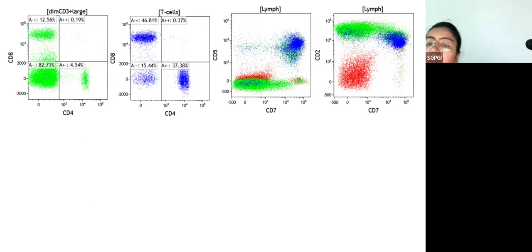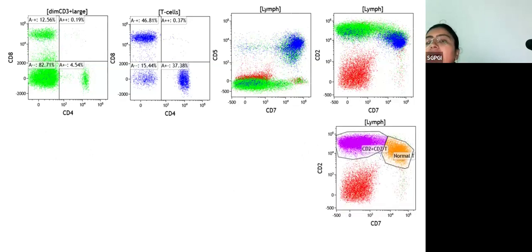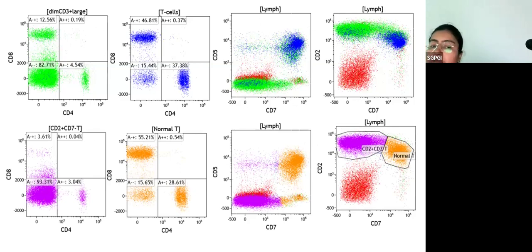You look at the CD2 expression. CD2 in the normal cells is here and your green cells, they are all over on the top. CD4 and CD8: in our CD3 positive large cells, majority of cells are CD4 and CD8 negative, while our normal T cells show this nice normal kind of a split. With respect to CD7 and CD5, the green cells, they were dim CD3 positive and they were large in size. You see that they completely nearly lack CD7 expression. Very few of them express a dim CD7, while they are very bright for CD2. Based on the CD2 and CD7 expression, we can separate these populations further: CD2 positive, CD7 negative cells and the normal T cells.